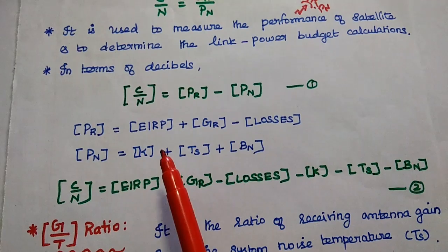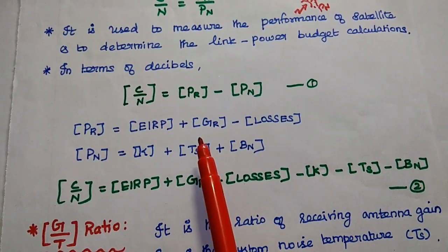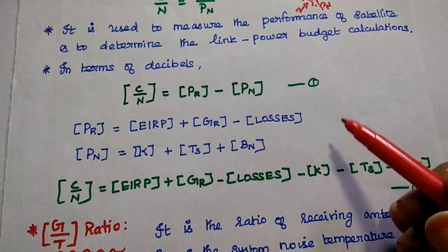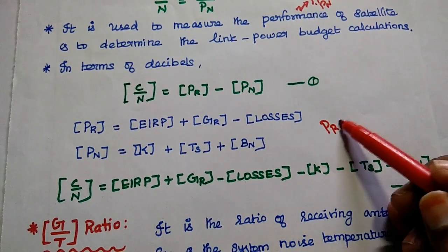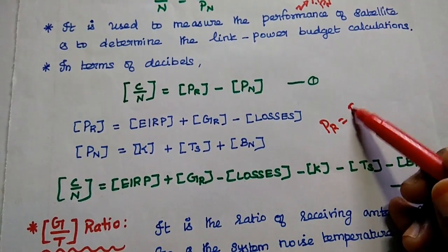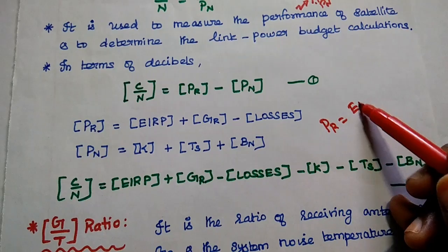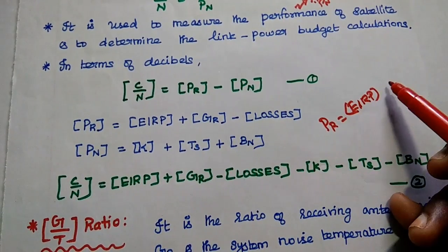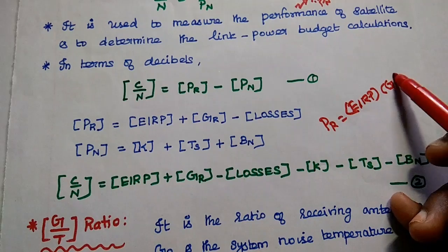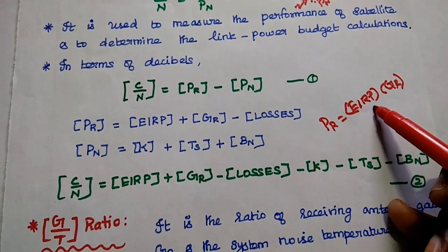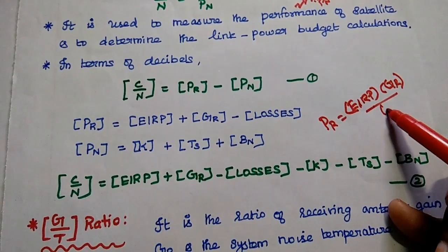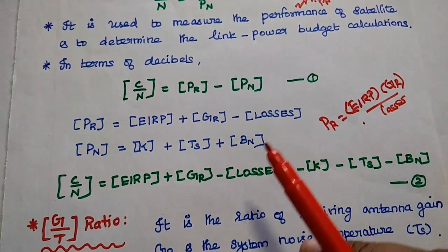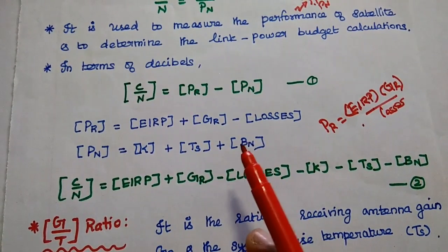The received power has EIRP plus GR minus losses. The received power is equal to EIRP — that is equivalent isotropic radiated power, which is the transmitted power multiplied with the antenna gain — plus the receiving antenna gain at the satellite, divided by losses. That is represented in terms of decibels.